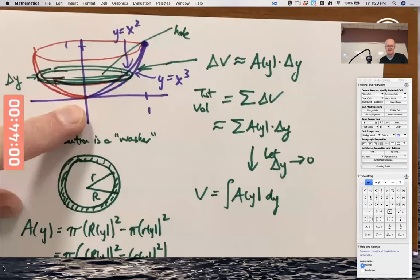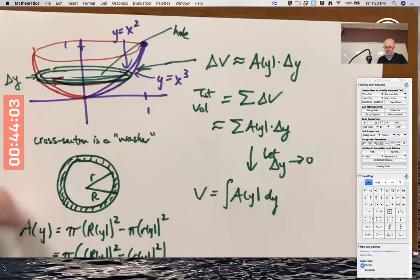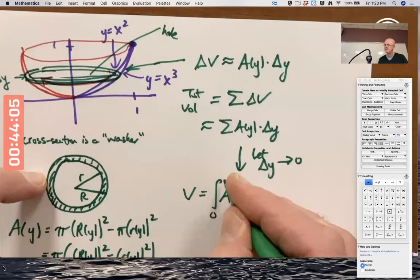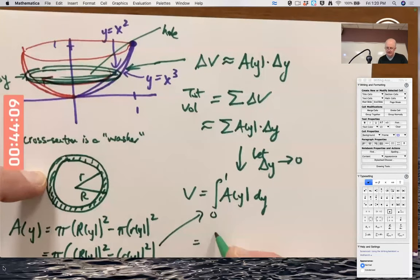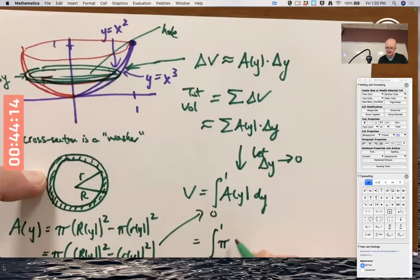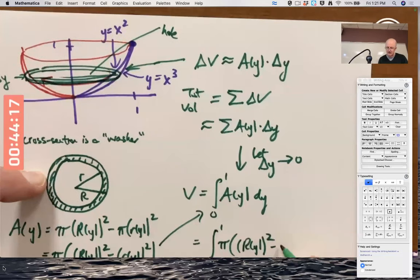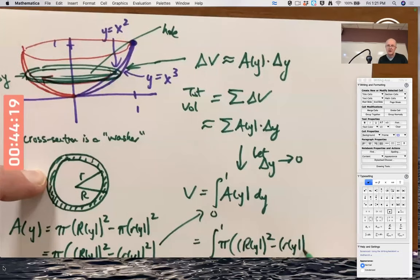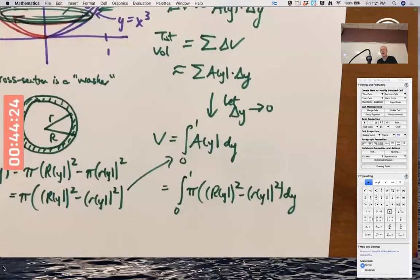Looking at the picture, y goes up from zero to one. Y goes from zero to one. And then plug in the function. Integrate from zero to one. Pi times capital R of y squared minus little r of y squared. But obviously, we're not done. We haven't figured out what capital R and little r are.